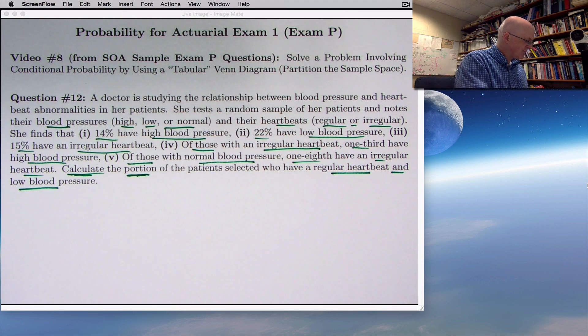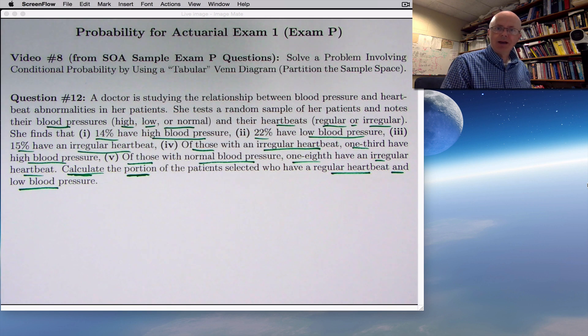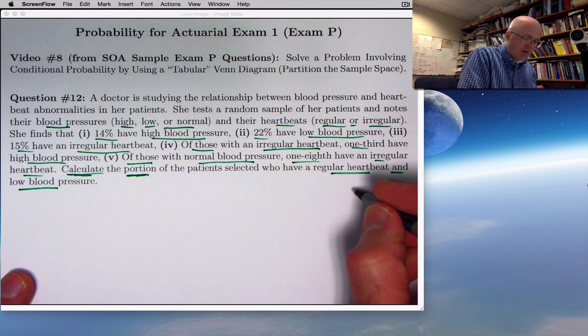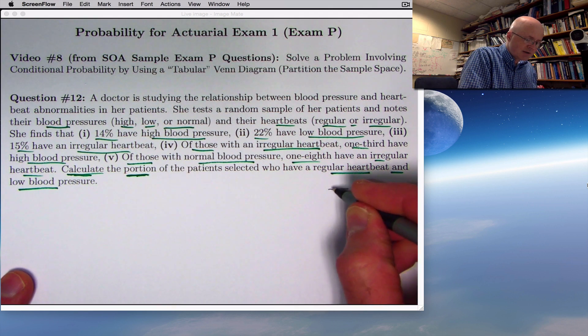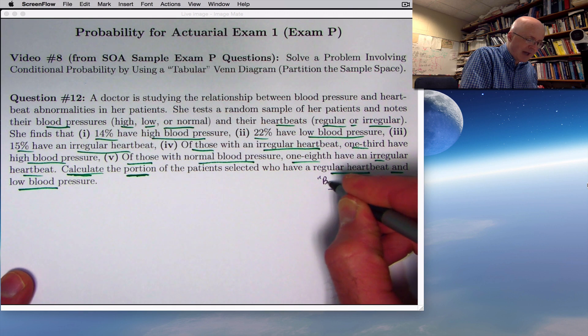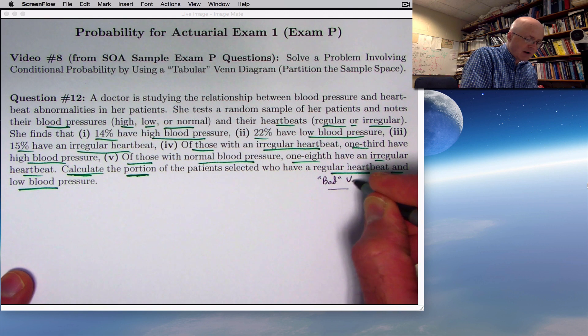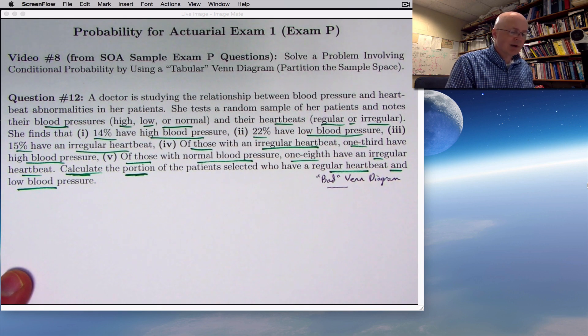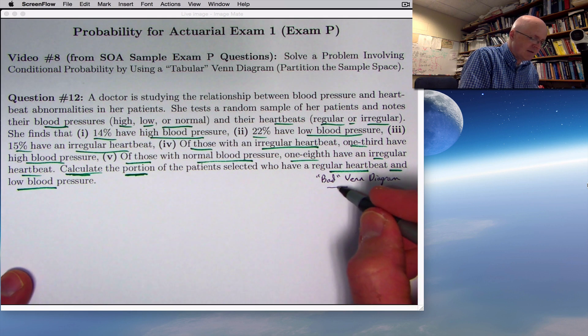Let me initially draw the Venn diagram as I drew it at first, and it was not such a good idea. And then I'll draw a better one. I'll draw it over here on the right and kind of small here. This is what I'm going to call, quote-unquote, a bad Venn diagram. It's not that it's wrong, and you can still solve the problem this way, just it made it more confusing than it needed to be.